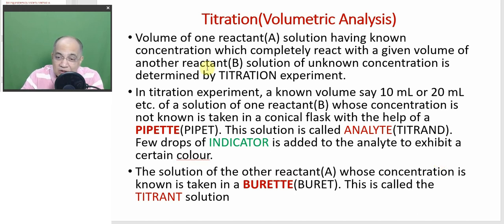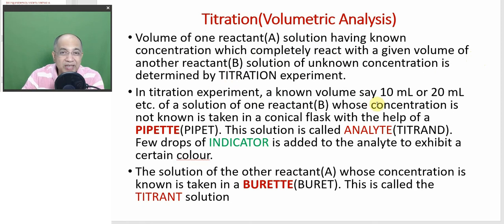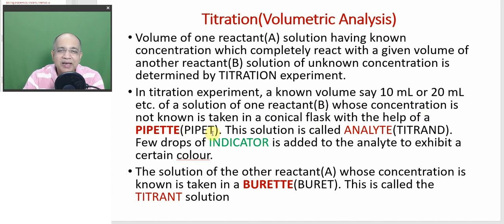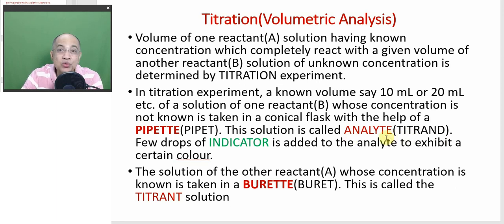In a titration experiment, a known volume — say 10, 20, or 25 ml — of solution B, whose concentration is unknown and we are going to determine, is taken in a conical flask with the help of a pipette. This solution is called the analyte, or sometimes the titrand, whose normality or concentration we are going to determine experimentally. Few drops of indicator are added to the analyte to exhibit a particular color.